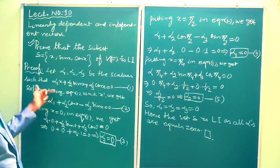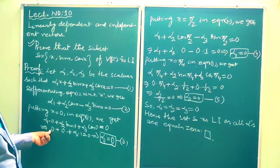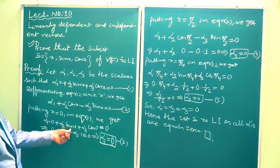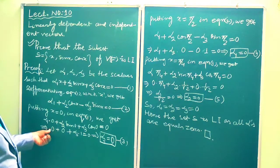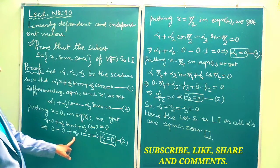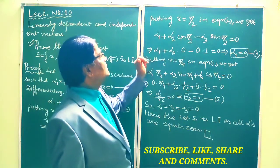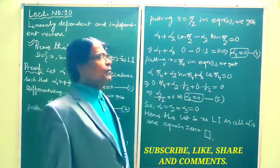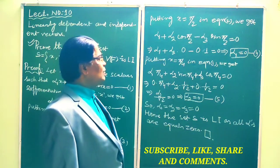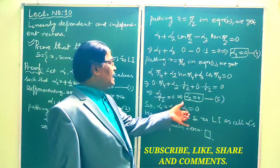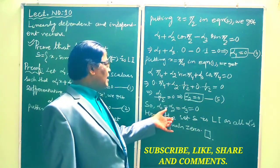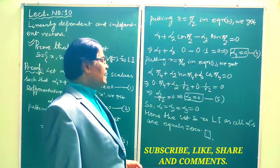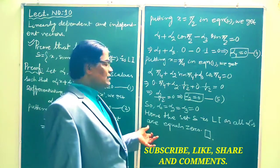Putting x = 0 in equation 1, we get α1·0 + α2·sin 0 + α3·cos 0 = 0. Simplifying, we get α3 = 0. Putting x = π/2 in equation 2 and simplifying, we get α1 = 0. Putting x = π/4 in equation 1 and simplifying, we get α2 = 0. Therefore all scalars α1 = α2 = α3 = 0, hence the set S is linearly independent.